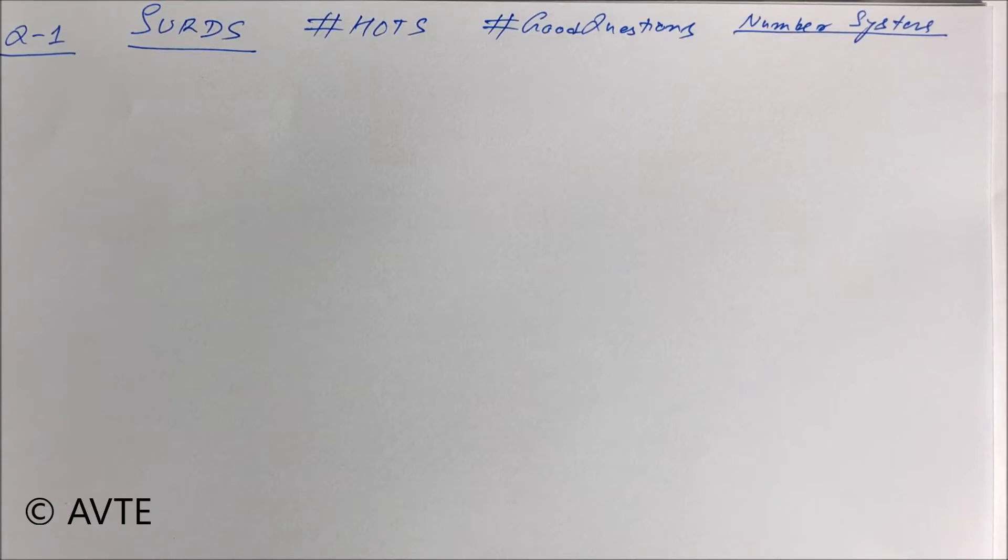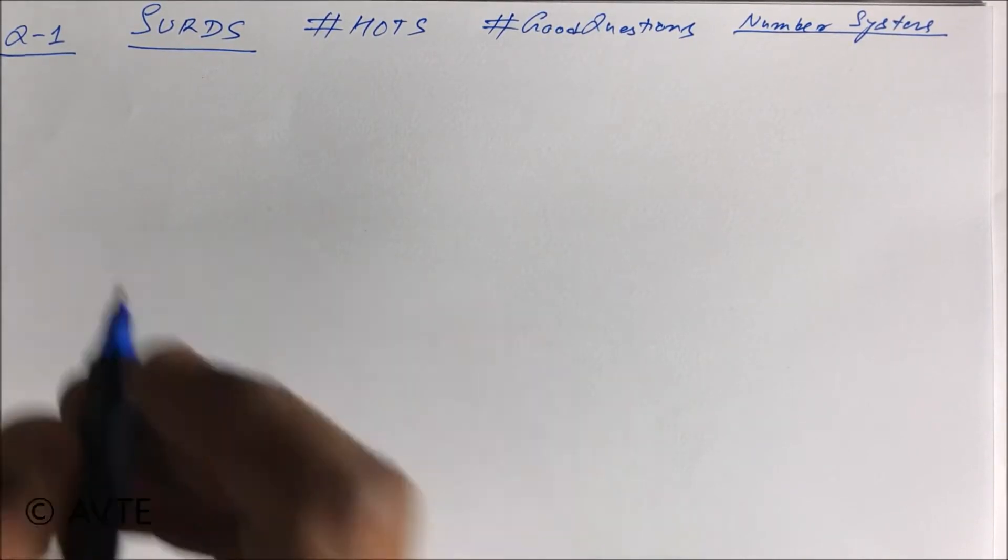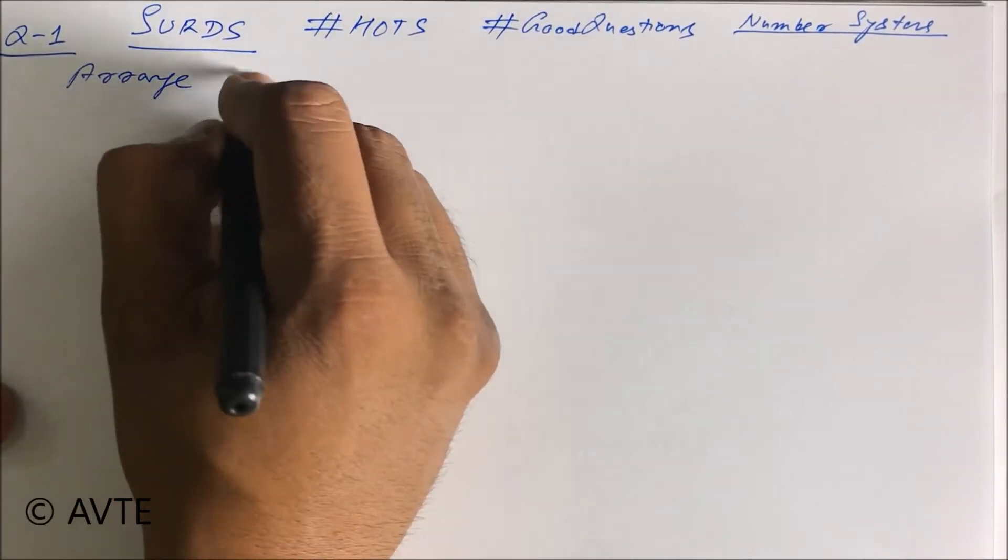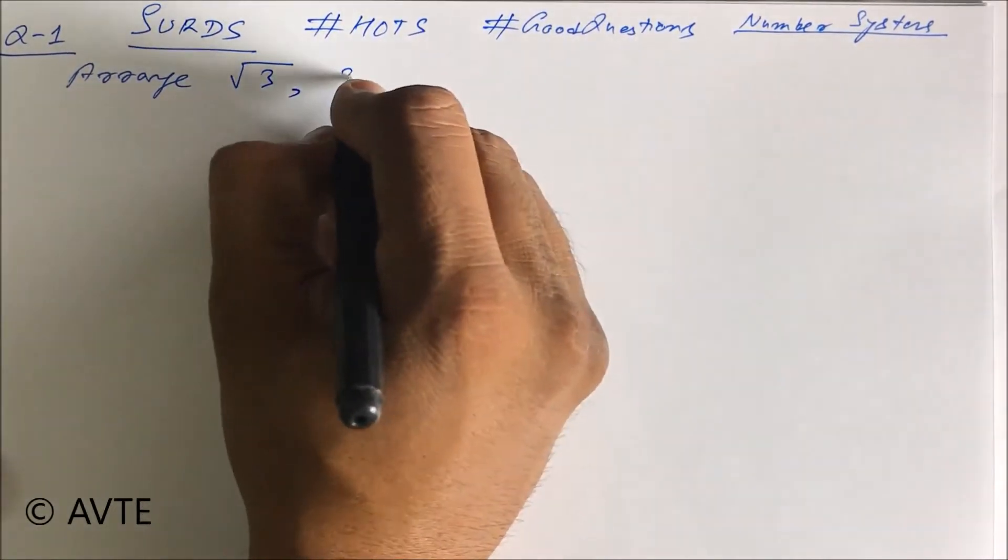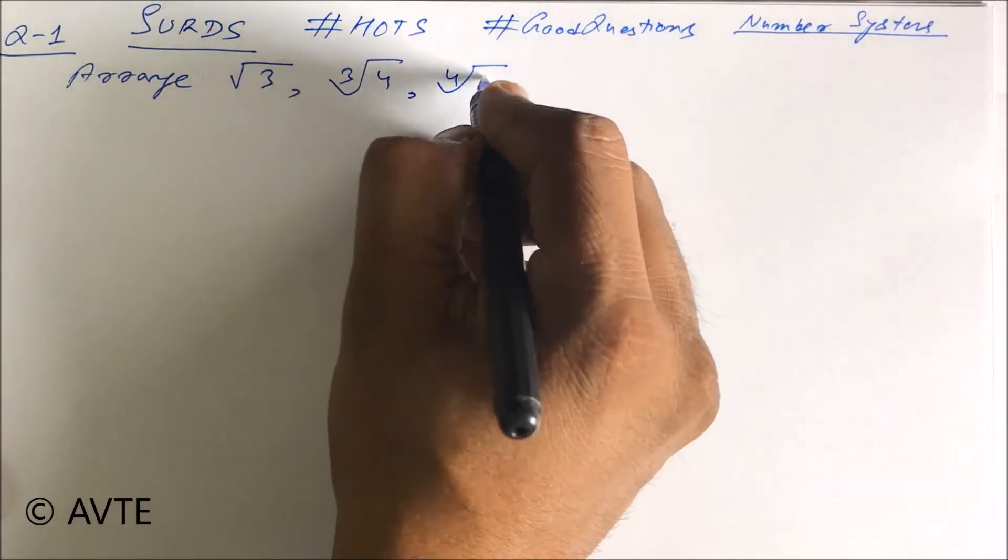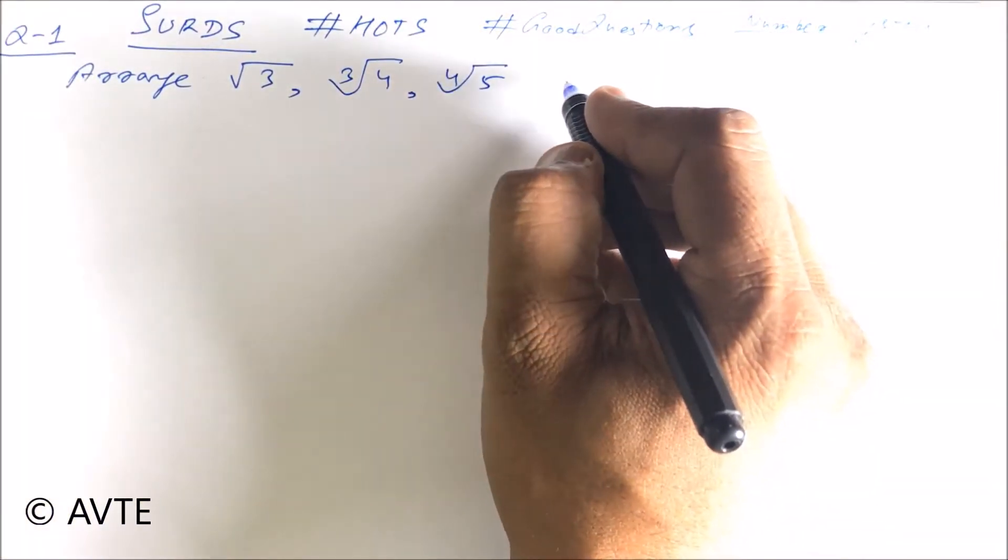So guys, in this series we do the video on a one-by-one basis. The first question is: you have to arrange √3, ∛4, and ∜5 in ascending order.